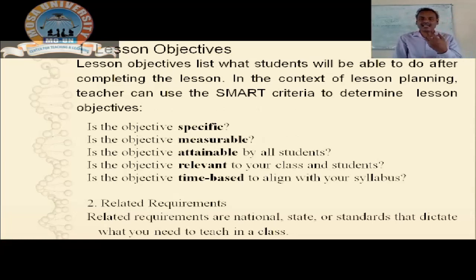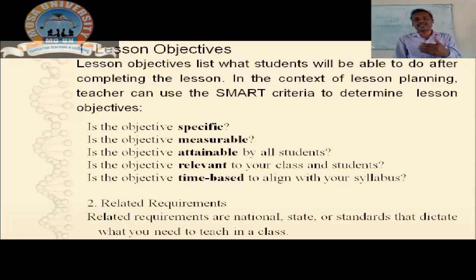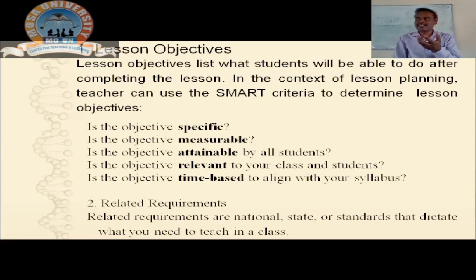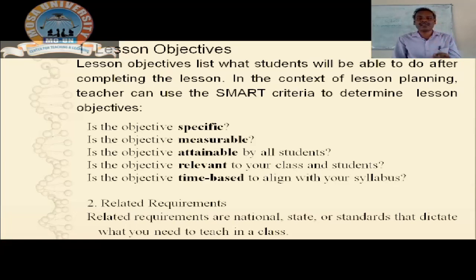Lesson objectives: these analyze what students will be able to do after completion of a particular unit or lesson. You make a list of objectives — maybe three to five per session. A commonly followed guideline is the SMART criteria: objectives should be Specific, Measurable, Attainable by all students, Relevant to the class, and Time-bound.